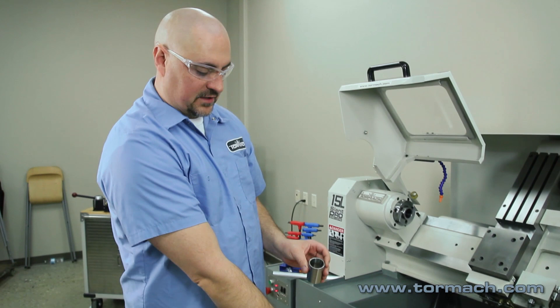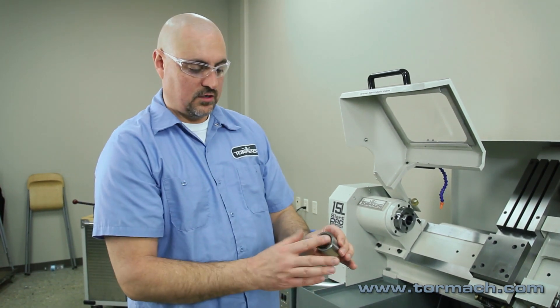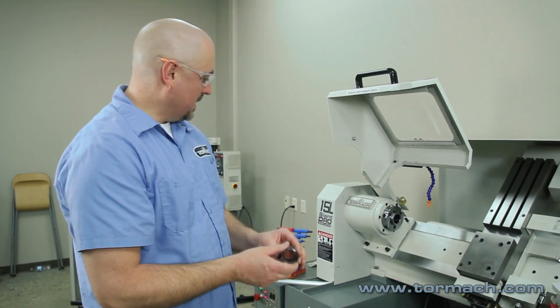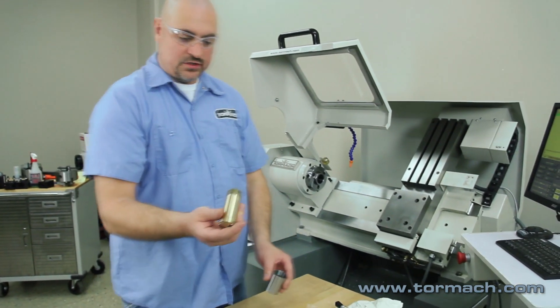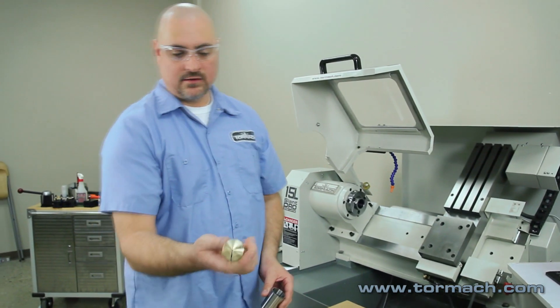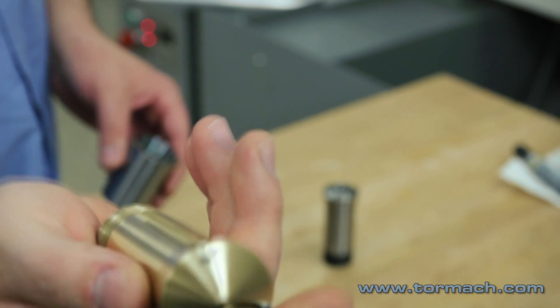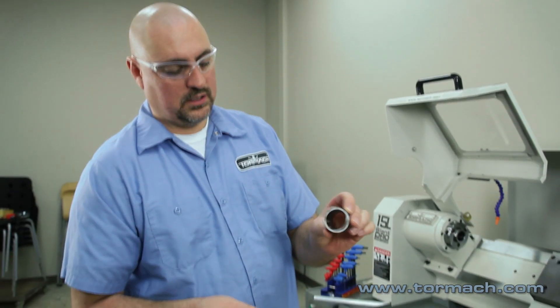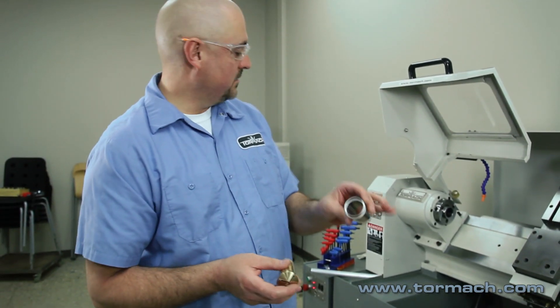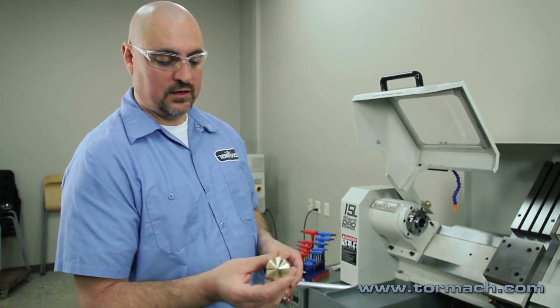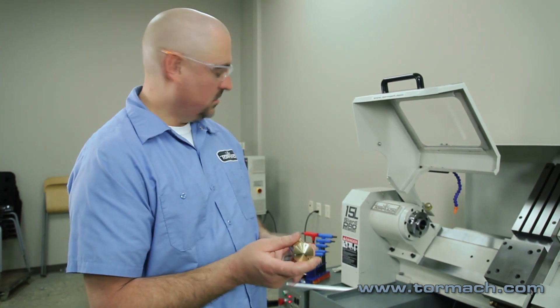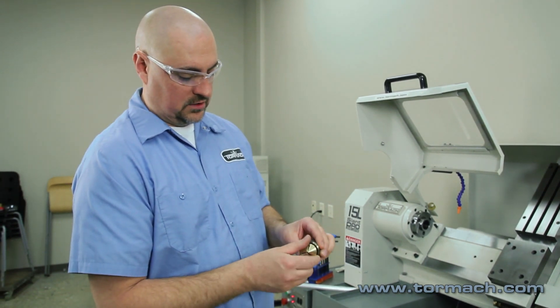So your 5C collets can only go into this collet adapter one way. If you go to use an emergency type collet or a soft collet like this, it's also got the key in it. You're going to want the insert to go in and out of the machine the same every time, so anything that you've machined in the insert is going to repeat.